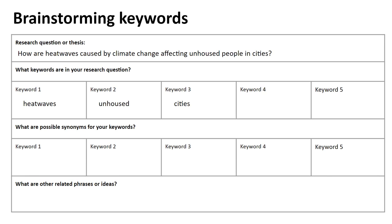These keywords might lead us to exactly what we need, but we should also think of some synonyms — because there are often many different ways to describe a concept, and the people who created a piece of information might not use exactly the same terminology we're using. You can use a thesaurus to come up with synonyms. In this case, we might come up with extreme heat as a synonym for heat waves, homelessness or homeless as another term for unhoused people, or urban as another way to describe a city.